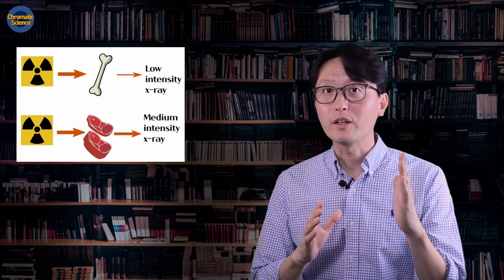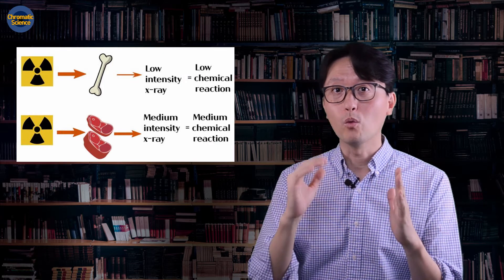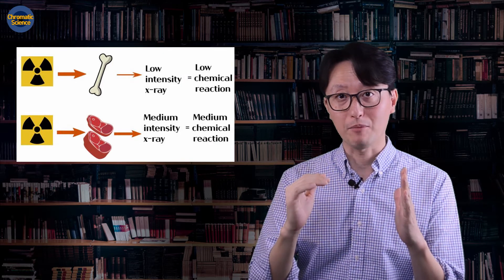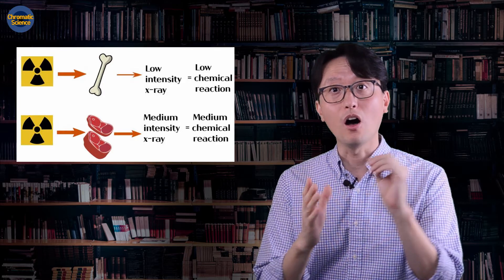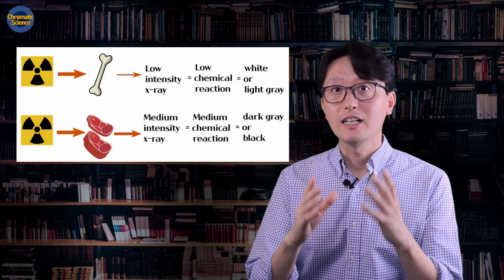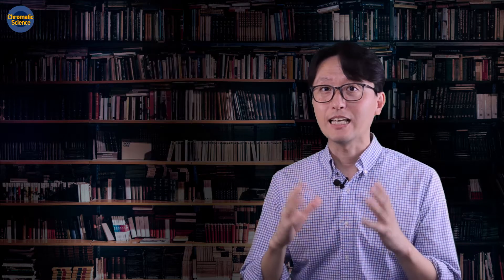Now, after the x-ray penetrates our body, let's shed that x-ray on film. What's gonna happen? On the film, the part with a high level of x-ray will have high chemical reactions, and the part with weak x-ray will have less chemical reactions. If black represents a high level of chemical reactions and white represents a low level, then you're going to have an x-ray image like this.